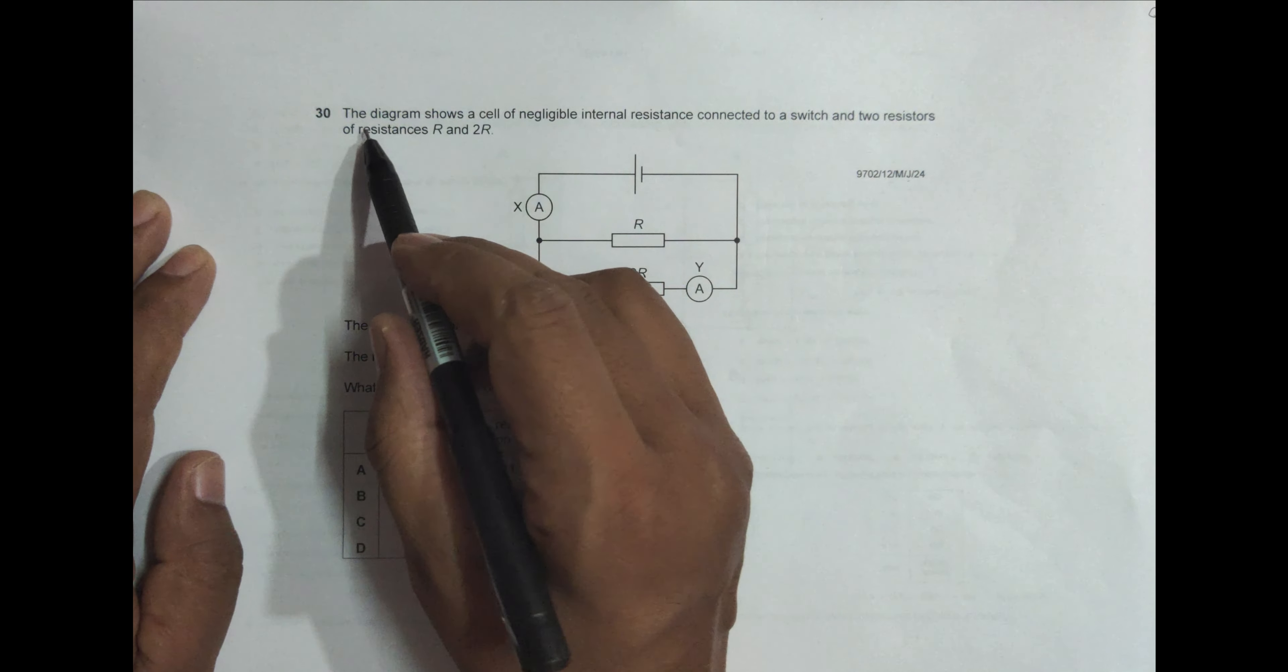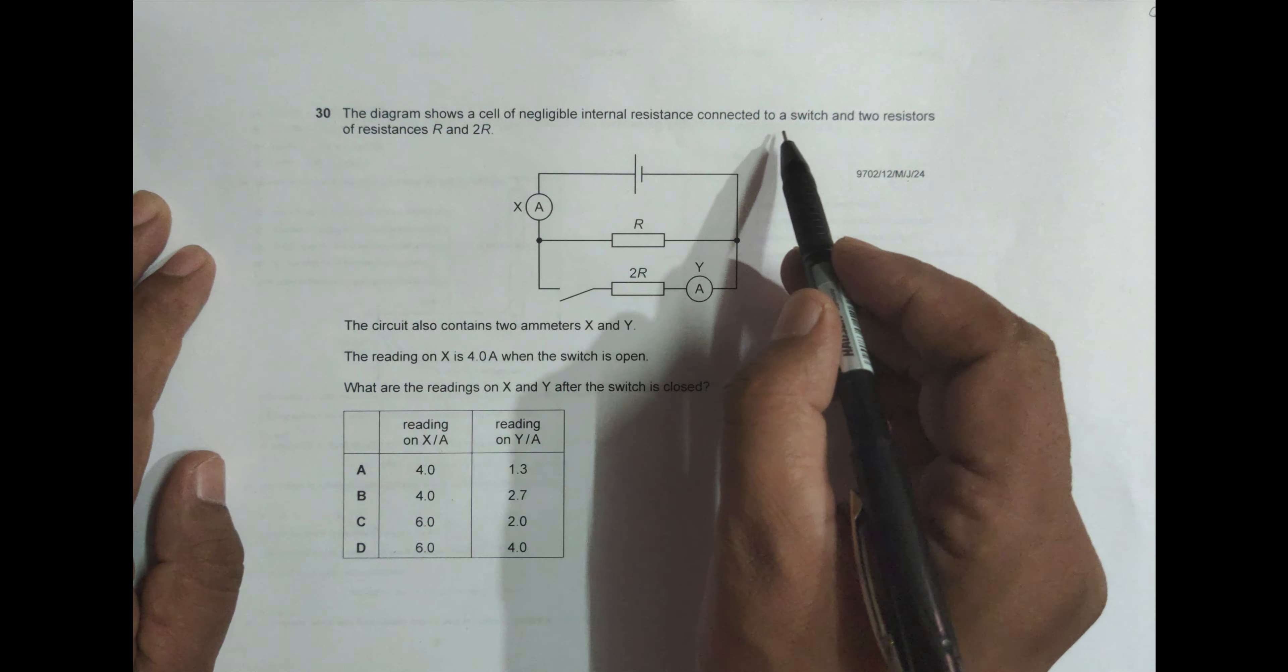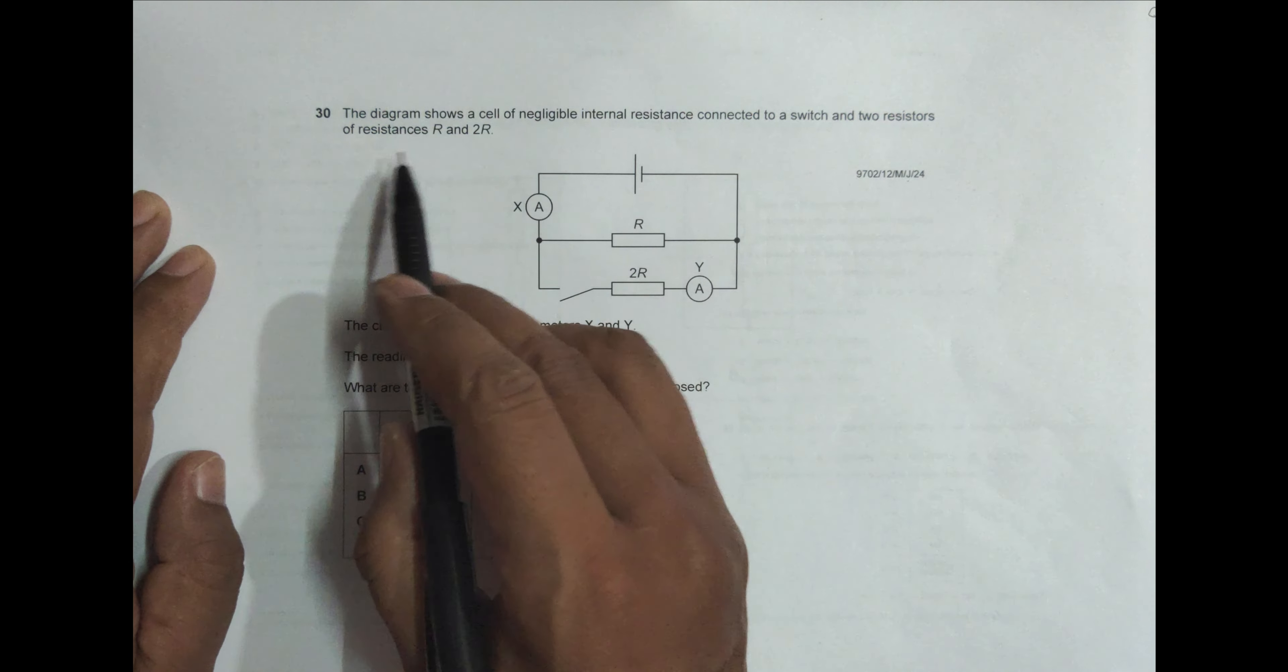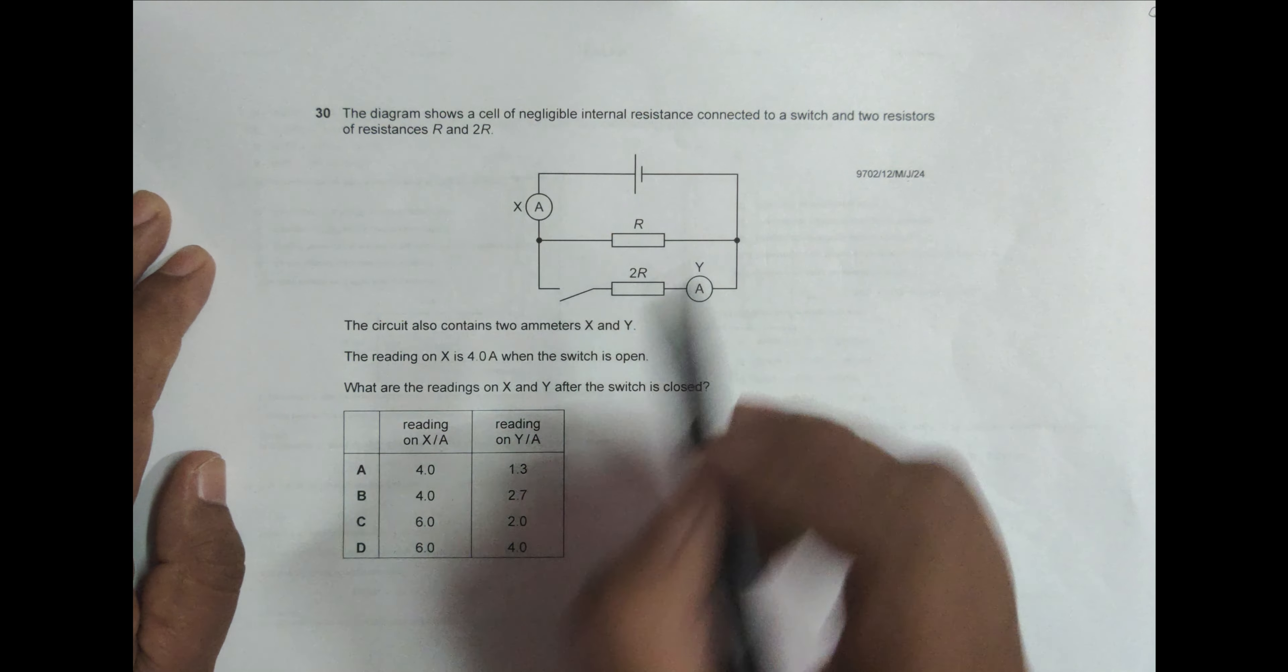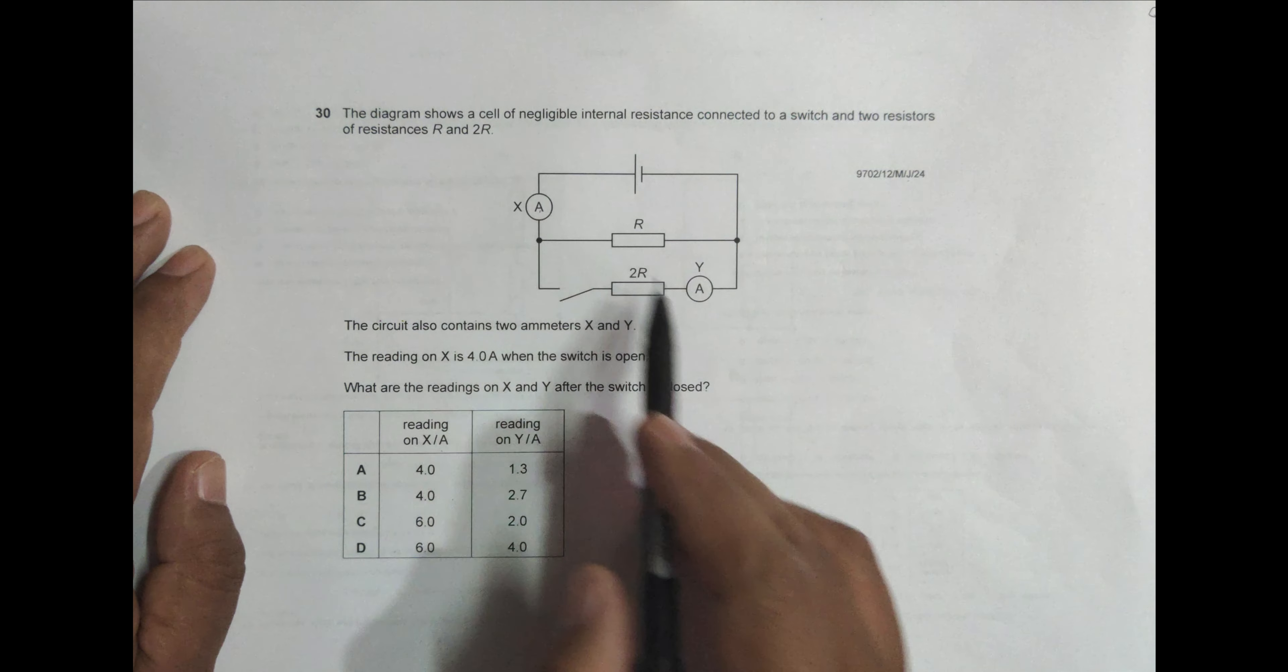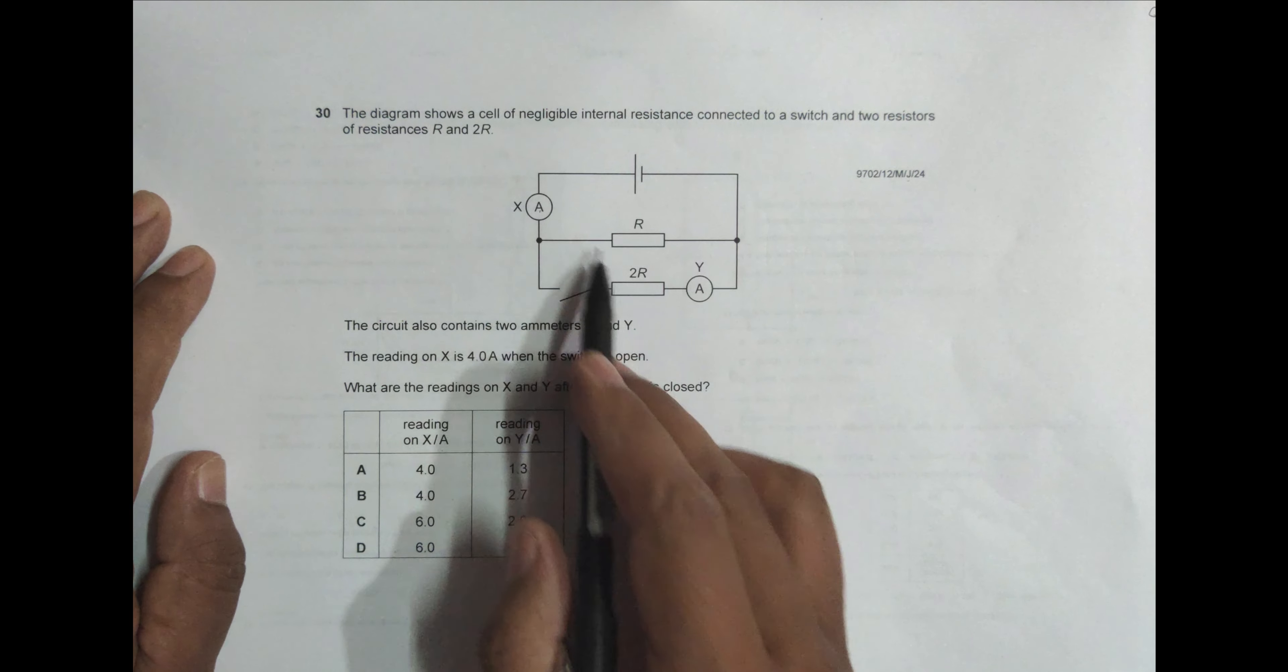The diagram shows a cell of negligible internal resistance connected to a switch and two resistors of resistances R and 2R. Switch here, resistors R and 2R here, and we have two ammeters as well.